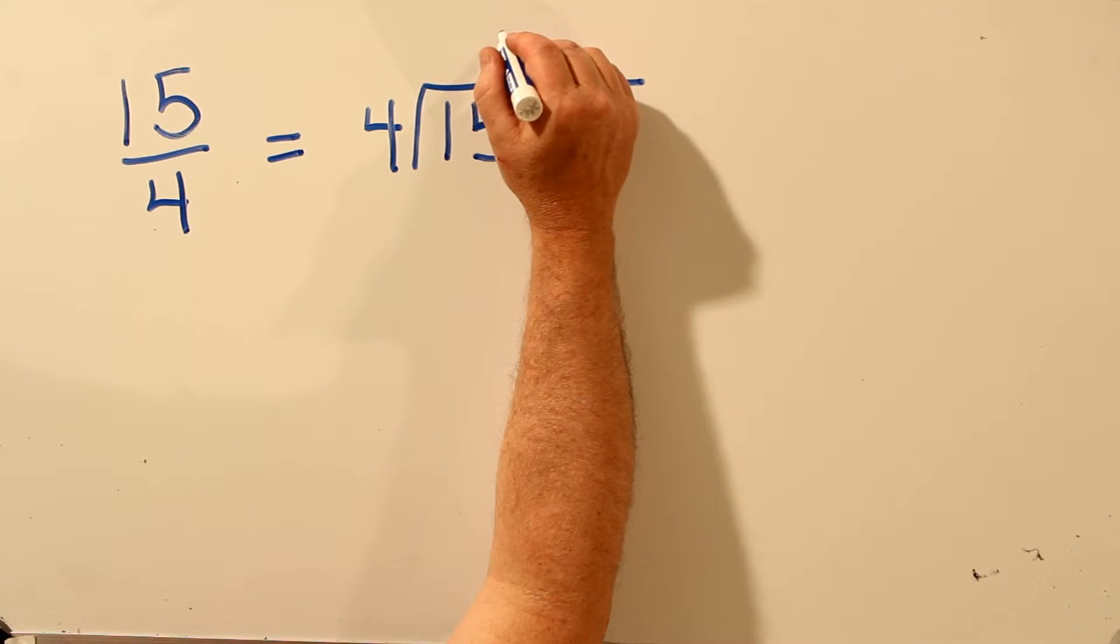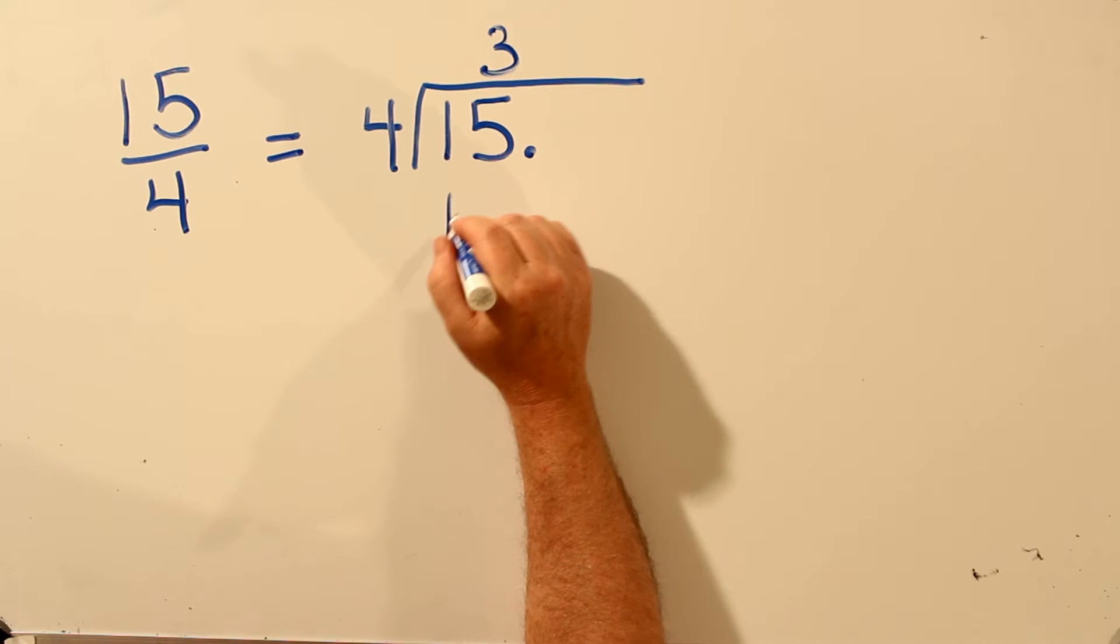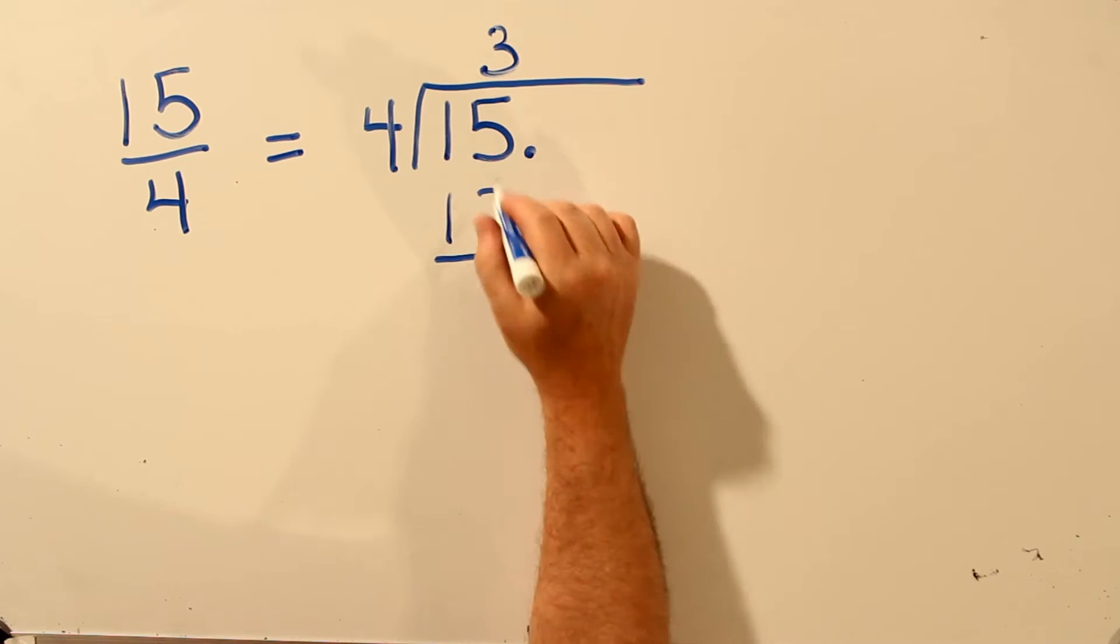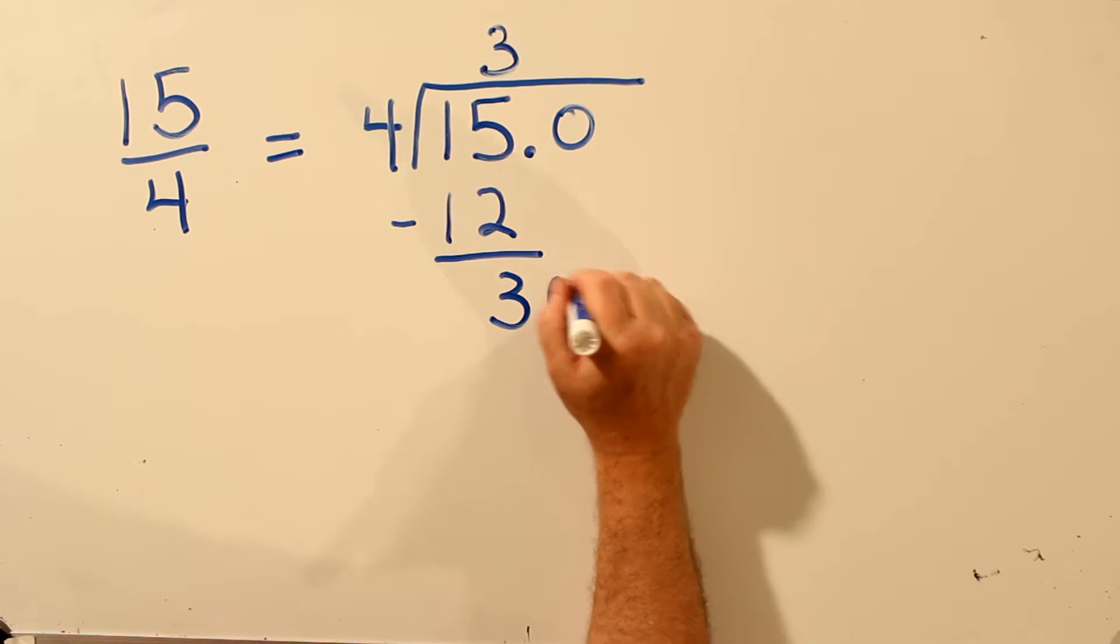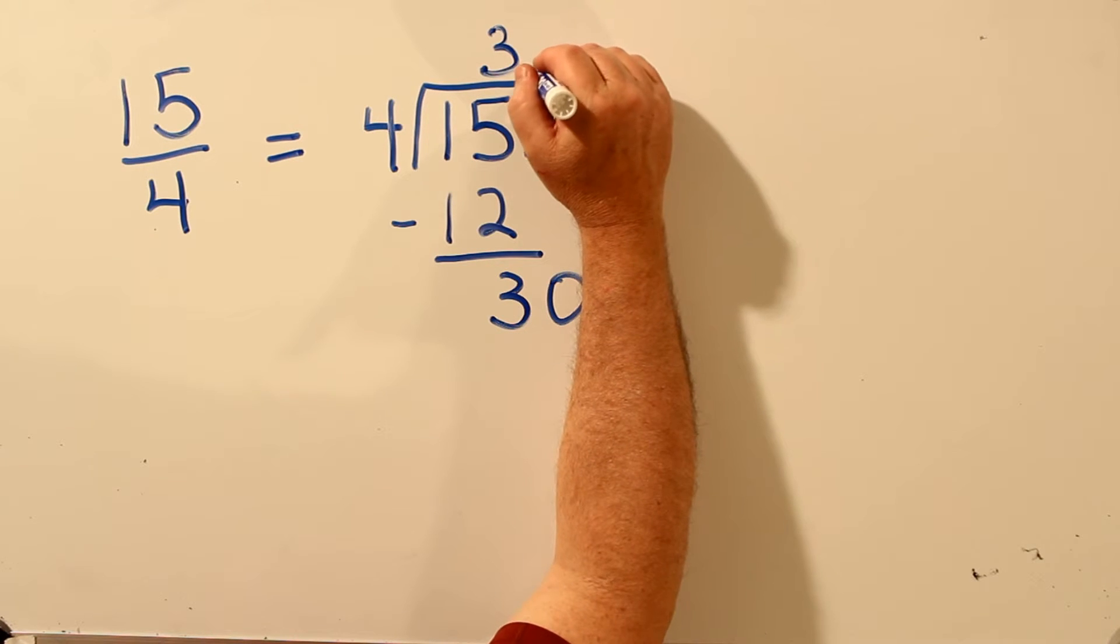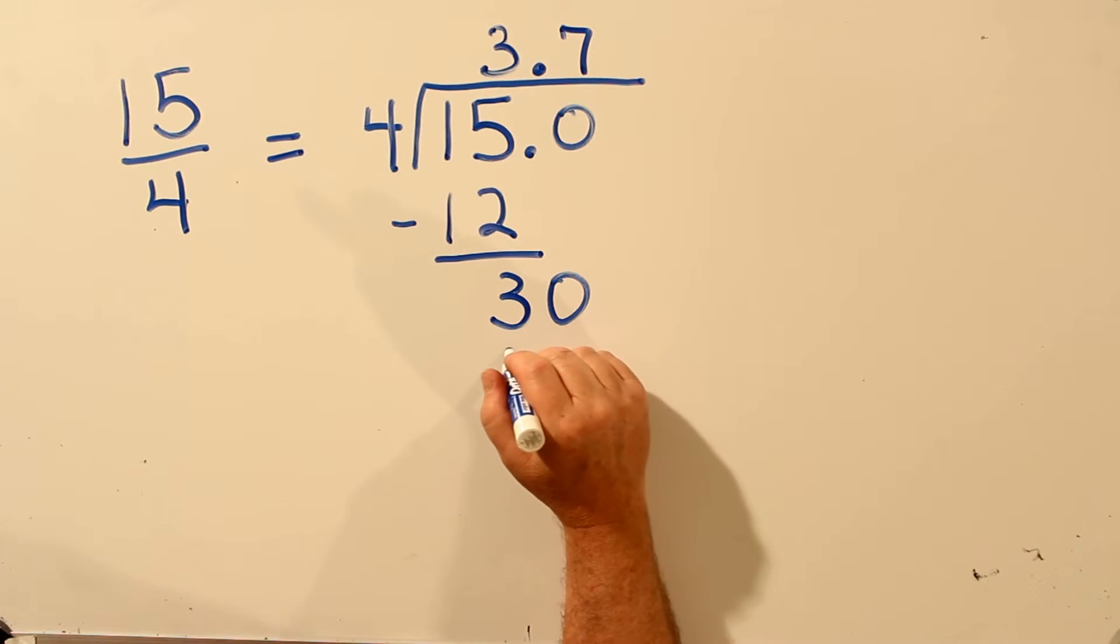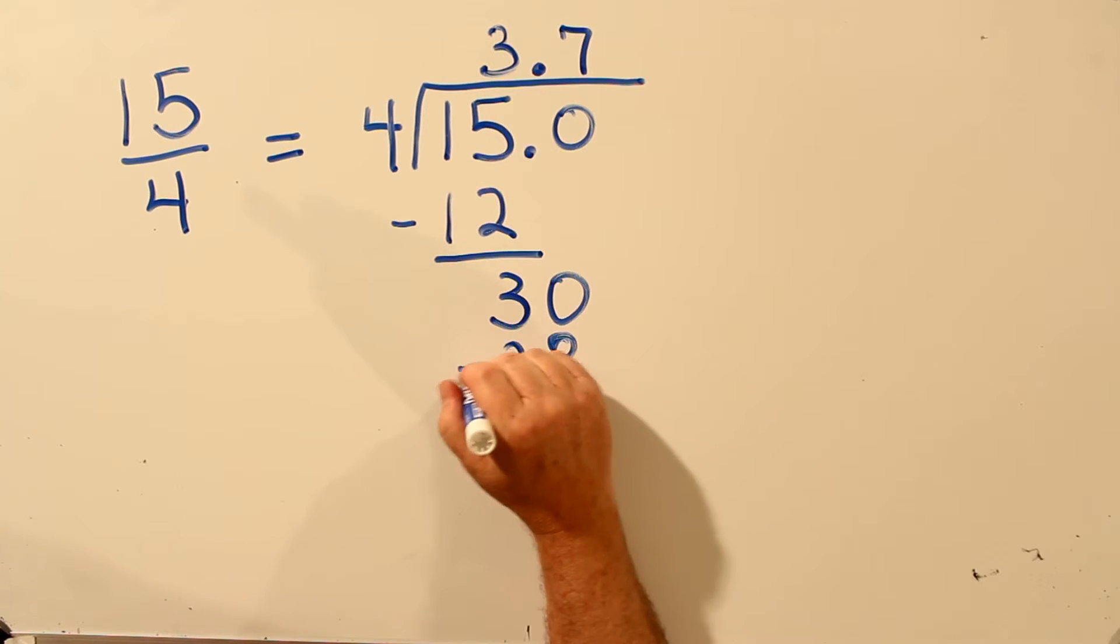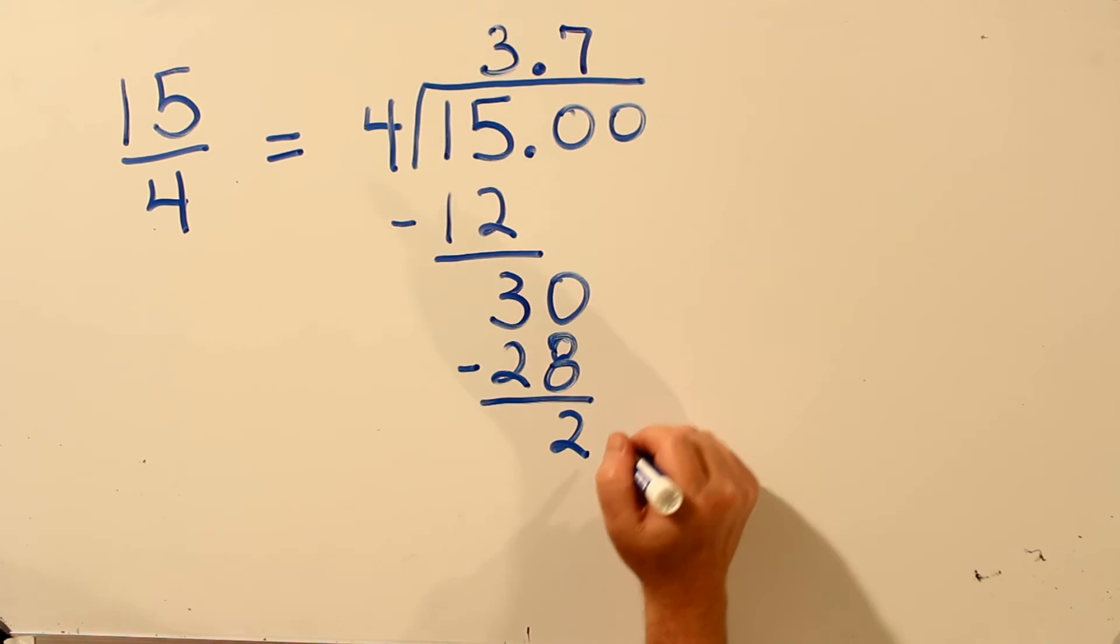4 goes into 15 three times. 3 times 4 is 12. Subtract. Remainder 3. We'll bring down the 0. 4 goes into 30, 7 times. 7 times 4 is 28. Subtract. Remainder is 2. Bring down another 0.